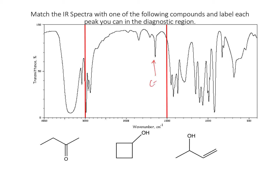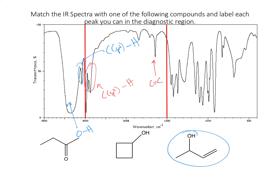So this is a carbon-carbon double bond. We also have the SP3 hybridized carbon CH stretches. This is my SP2 hybridized CH stretch, and then this is the OH stretch of an alcohol. So we're looking for a molecule that has a carbon-carbon double bond and an alcohol, and this is the best candidate based on the choices given.